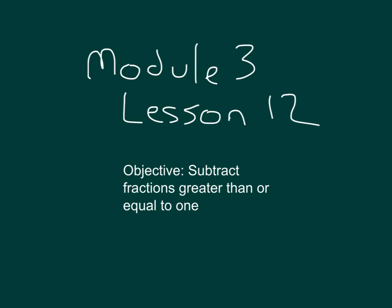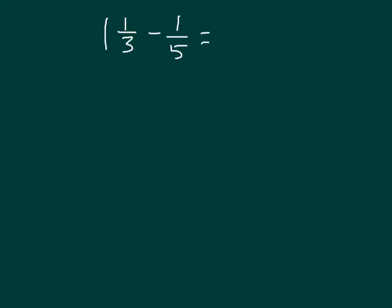Our objective within this lesson is to subtract fractions greater than or equal to 1. Here we have the question 1 and 1 third minus 1 fifth. Let's think about what this looks like. Here we have a number line where we are starting at 1 and 1 third, and then we're subtracting 1 fifth.